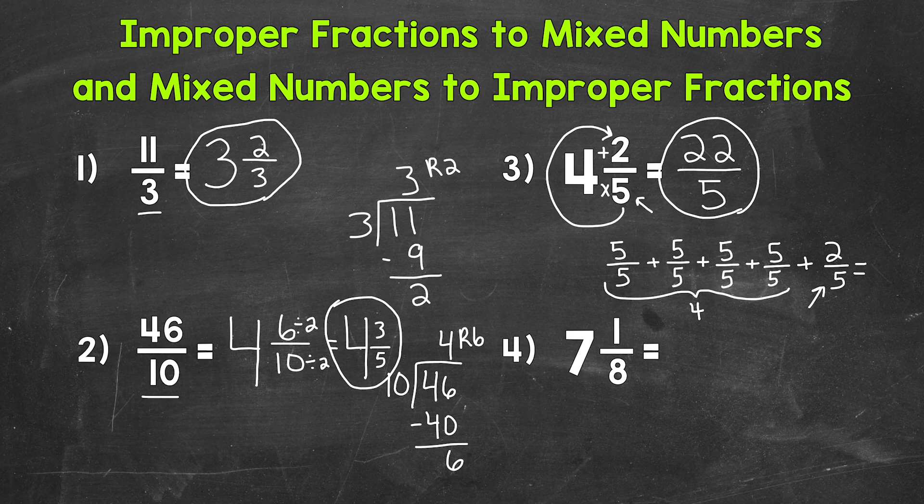5 plus 5 is 10, plus 5 is 15, plus 5 is 20, plus 2 is 22, and our denominator is 5. So we can see that we got 22 fifths. Now using this method right here is a lot quicker. It's a shorter way than writing everything out. So again, multiply and then add.